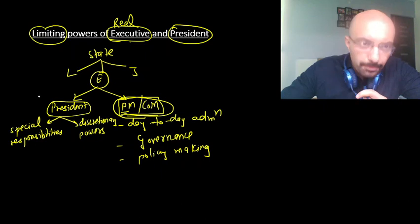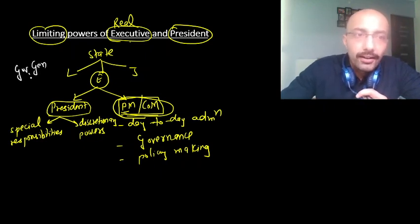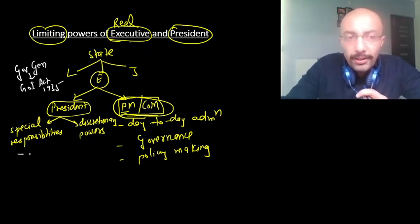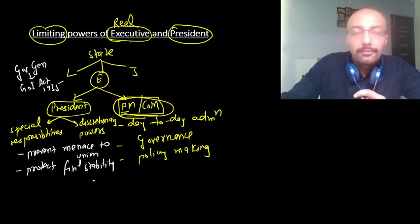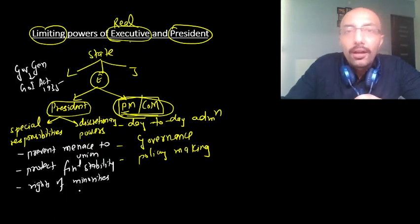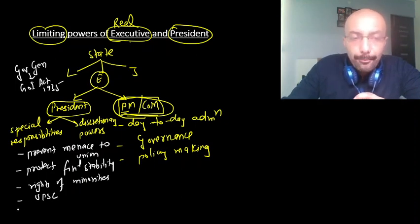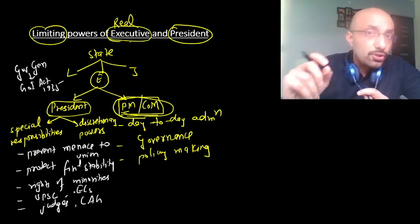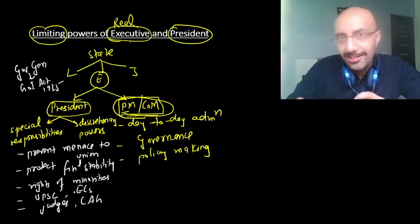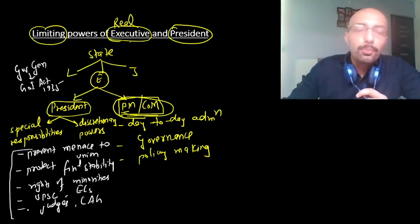Something similar had been done under the Government of India Act, 1935, where powers were given to the Governor General. These discretionary powers could include: preventing any gross menace to the Indian Union, protecting the financial stability of the Union, protecting the rights of minorities, appointment of UPSC members, appointment of judges, CAG, and even election commissioner members — because the Election Commission must be an autonomous body for free and fair elections.